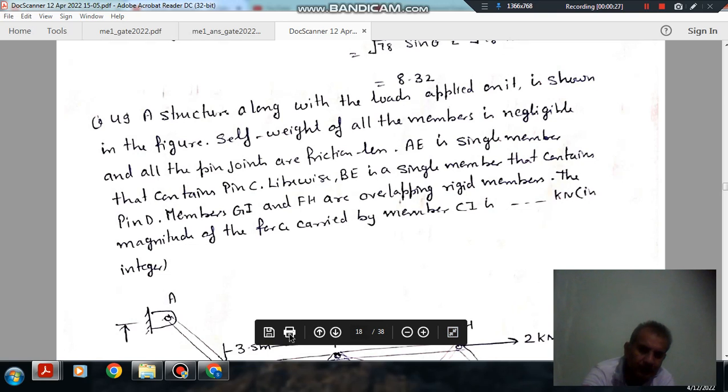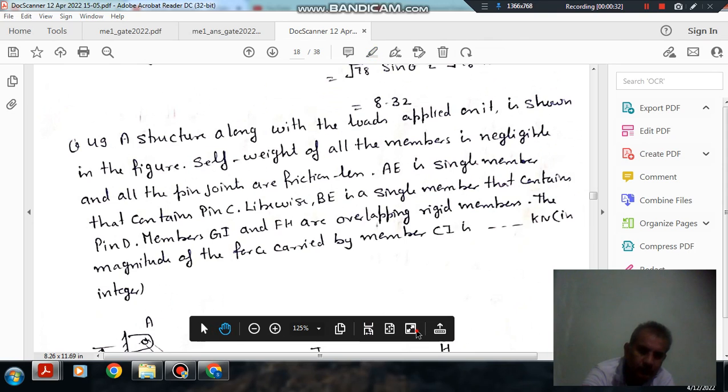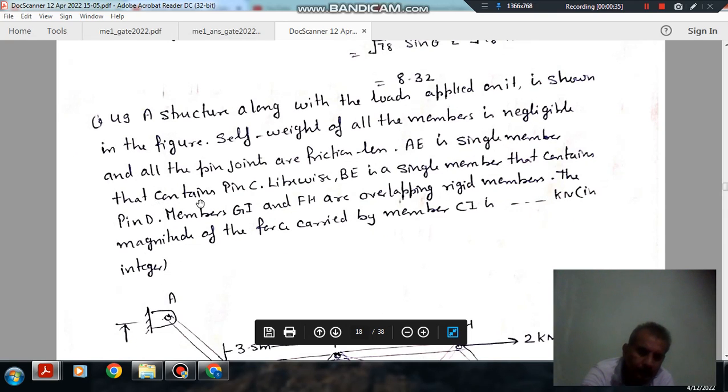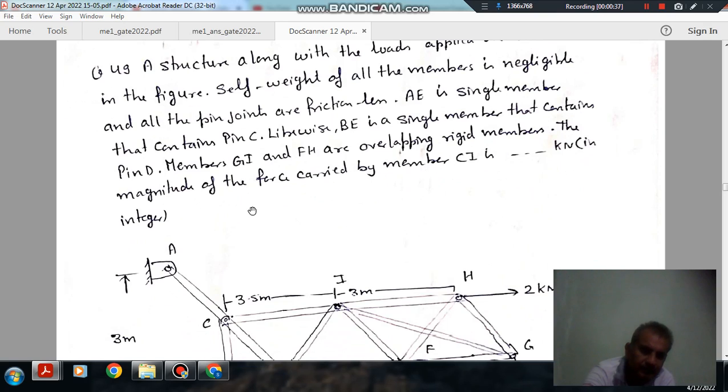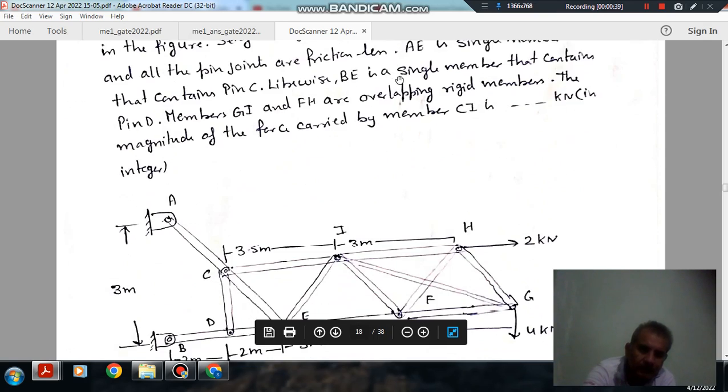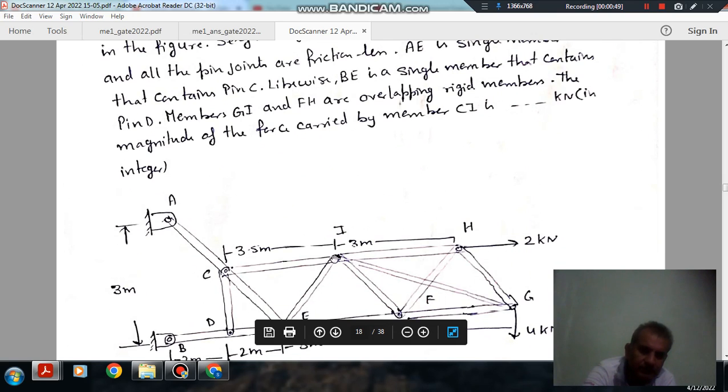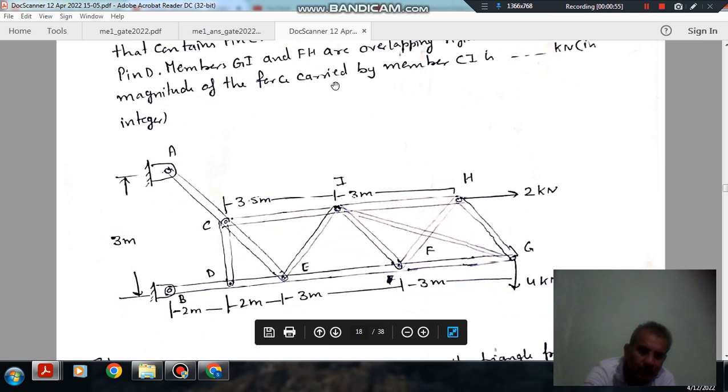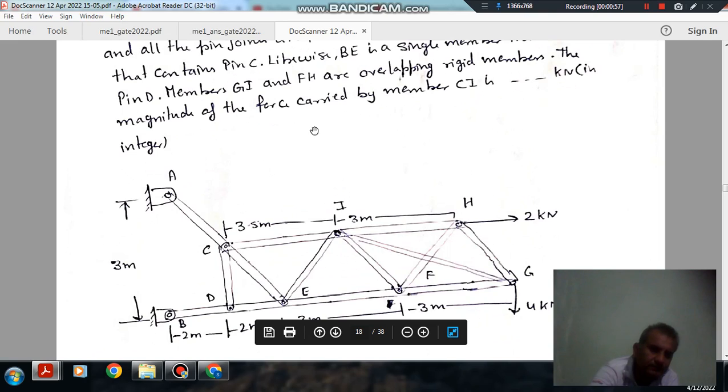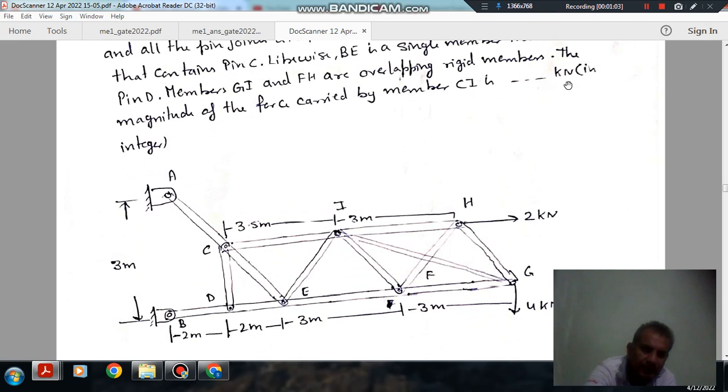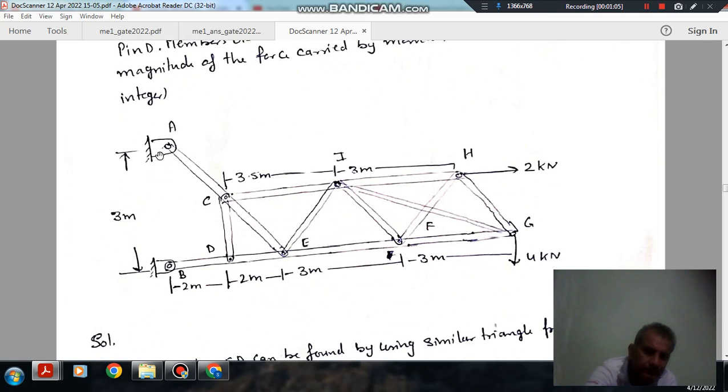Likewise, B is a single member that contains pin at D. Members GI and FH are overlapping rigid members. The magnitude of force carried by member CI is dashed in integer. So this is the figure given, and here the dimensions.